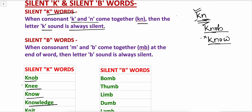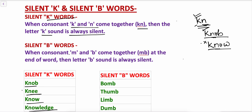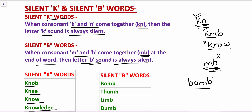Now let's see silent B words. When the consonants M and B come together to form MB at the end of the word, the B sound will be silent and the dominant sound will be M. For example, 'bomb' — here B is silent. 'Limb' — M and B consonants are together at the end, so the sound of B is silent and it is pronounced as 'limb.' So when consonants M and B come together at the end of a word, the letter B sound is always silent.